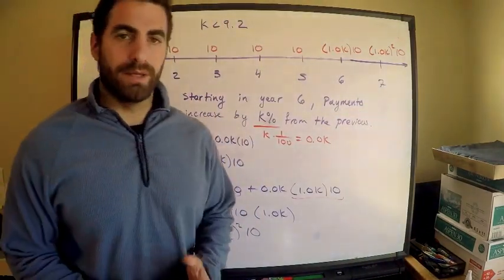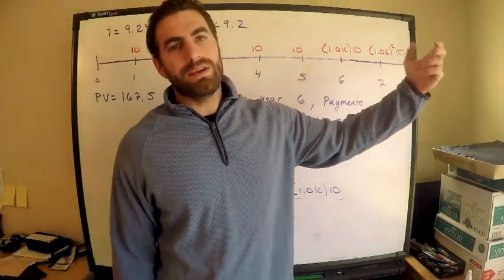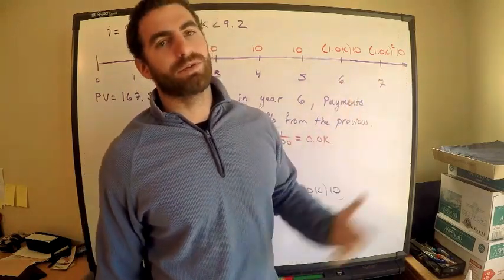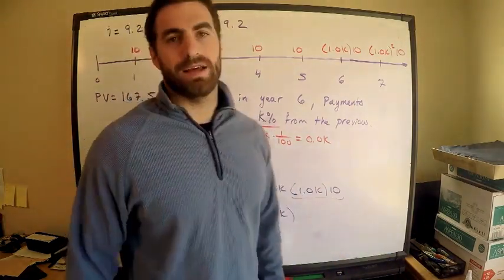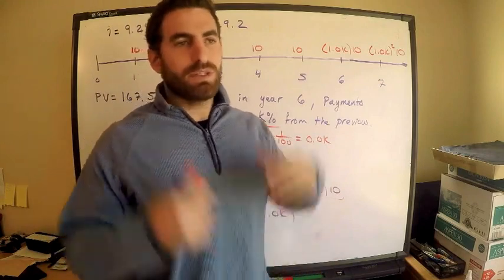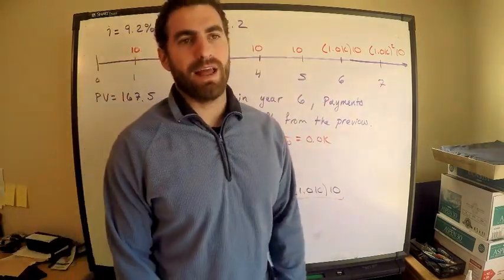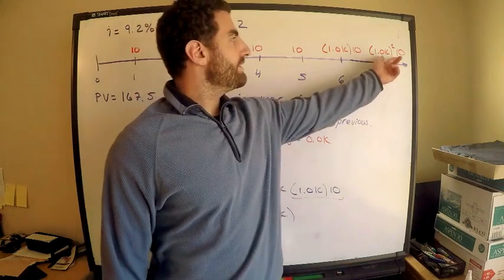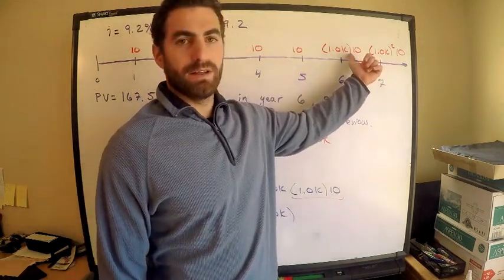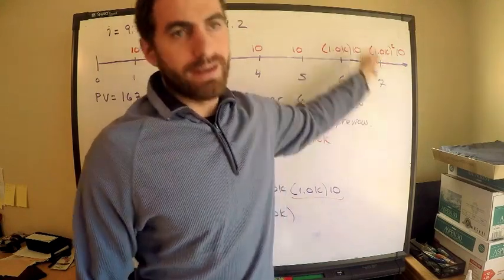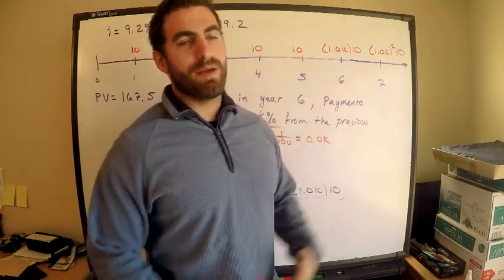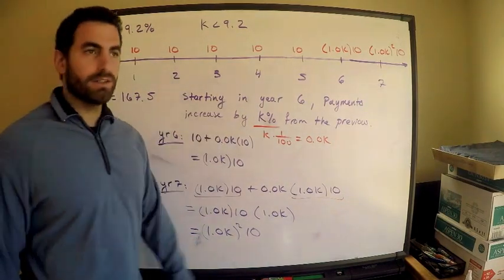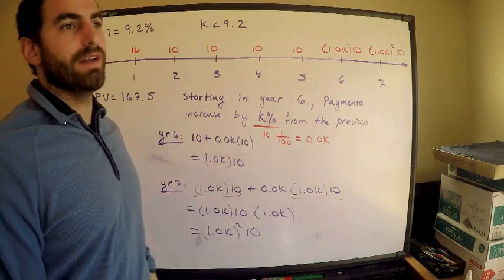Once I get past year five, the payments are given as a geometric progression. What is a geometric series? By definition, it means that every term is a multiple of the previous term, and it's always the same multiple. The common ratio is 1.0K. The payments form a geometric progression. I just wanted to explain it in case you didn't know where it came from.